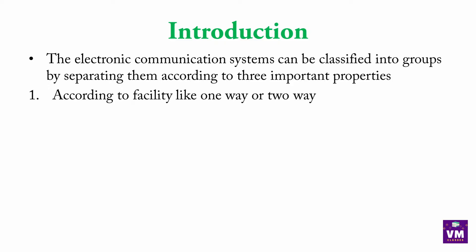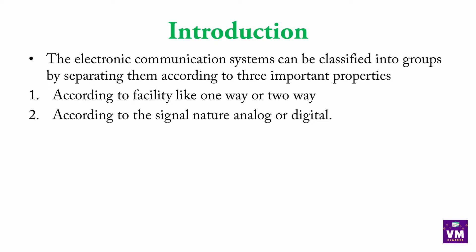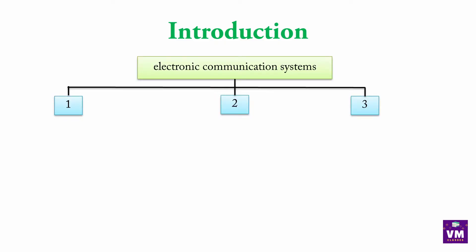Sabse pehla point hai according to facility — like one way or two way. One way communication hai ya two way hai, uske hisaab se yahan do types hote hai. Phir according to the signal nature — analog or digital. According to process of transmission. Yeh three factors consider karke yahan different types of communication system hai. Electronic communication system mein humne teen properties dekhi — first, second, aur third.